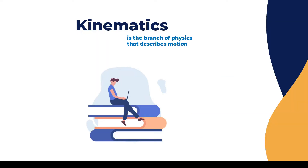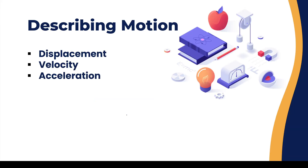We are in the chapter of kinematics. Kinematics is the branch of physics that describes motion. To describe motion in physical or mathematical terms, we use displacement, velocity, and acceleration. All of these definitions differ from each other in how they describe motion.